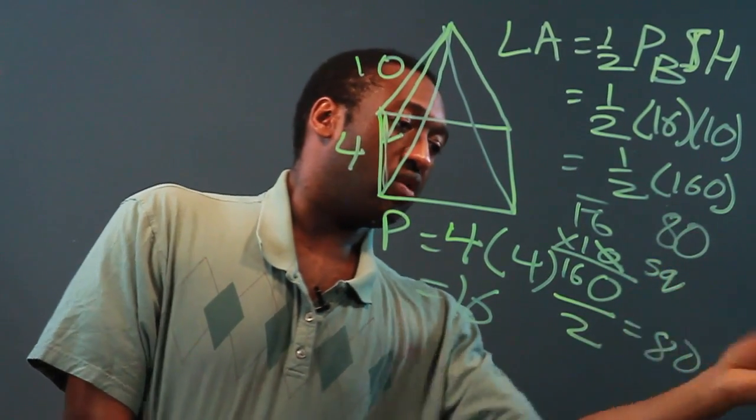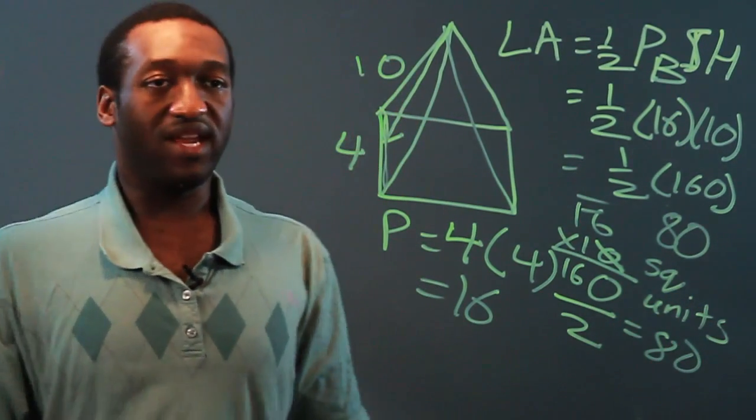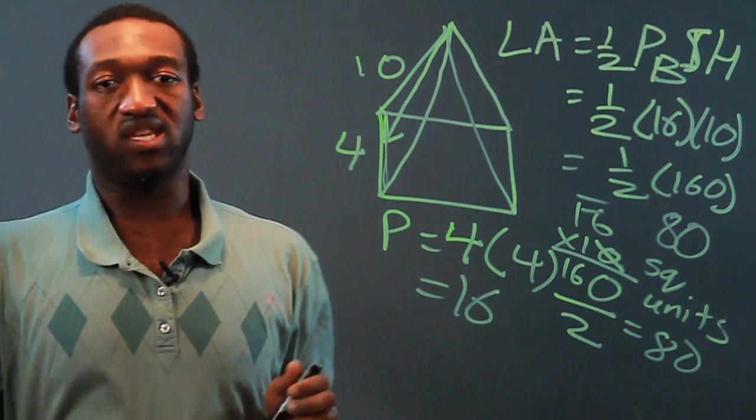And of course since we're talking about an area it's going to be in square units. So that's how you find the lateral area of a pyramid with a base edge and a slant height. Thank you.